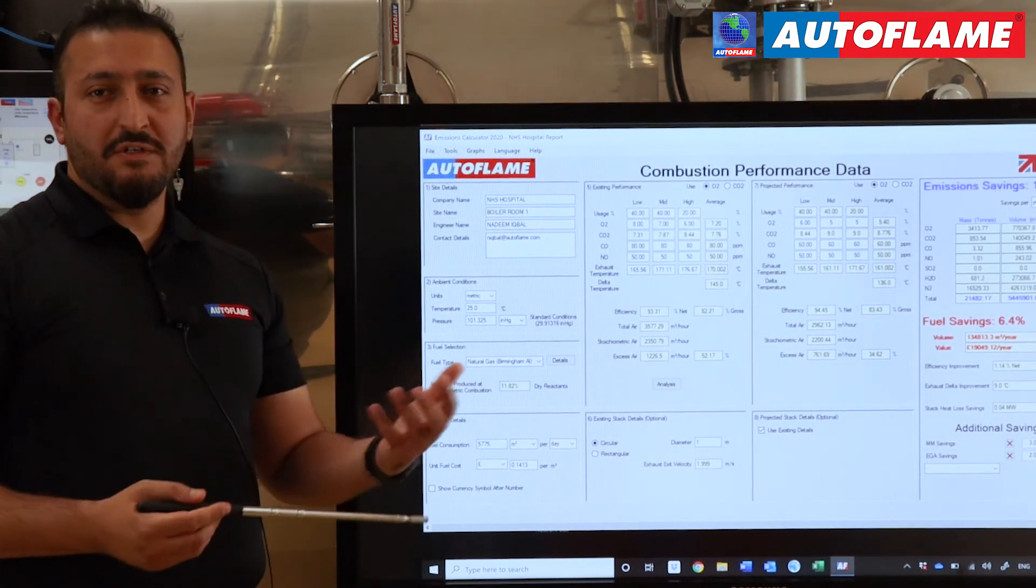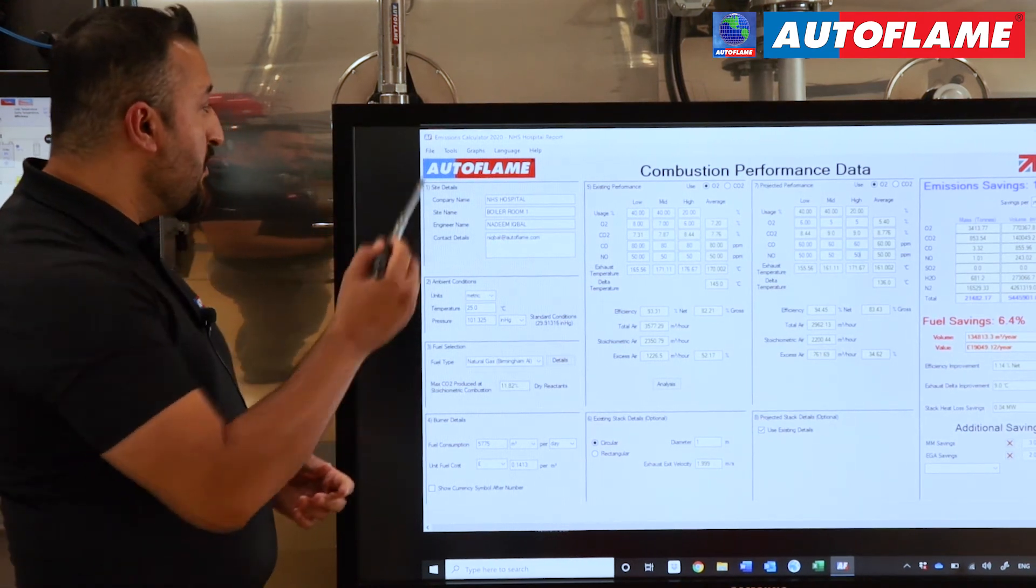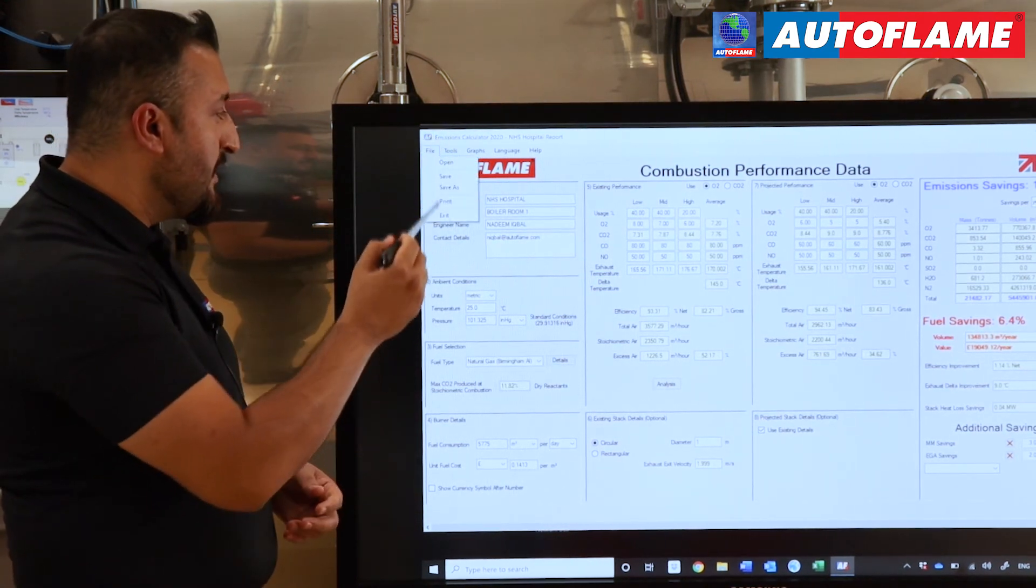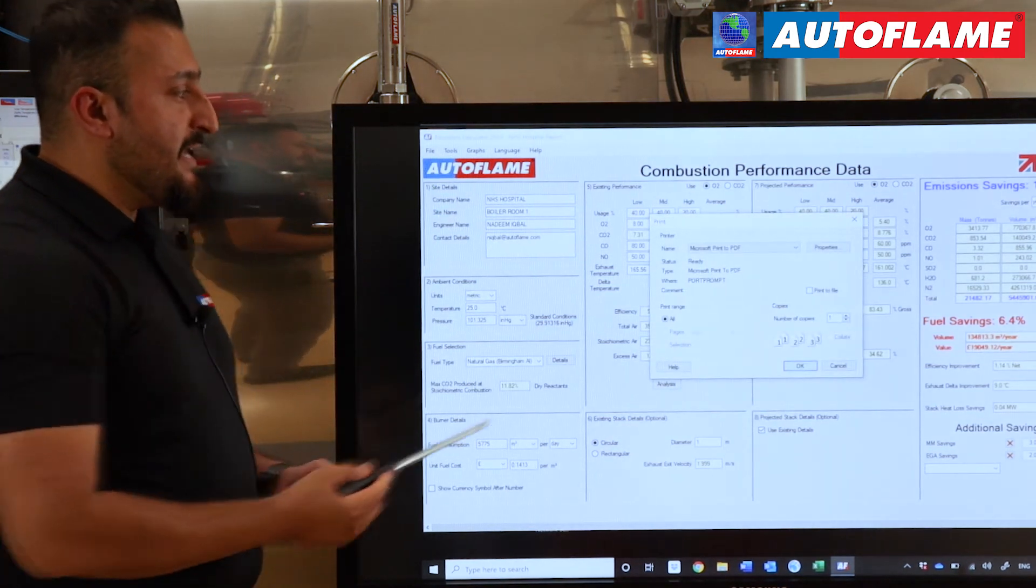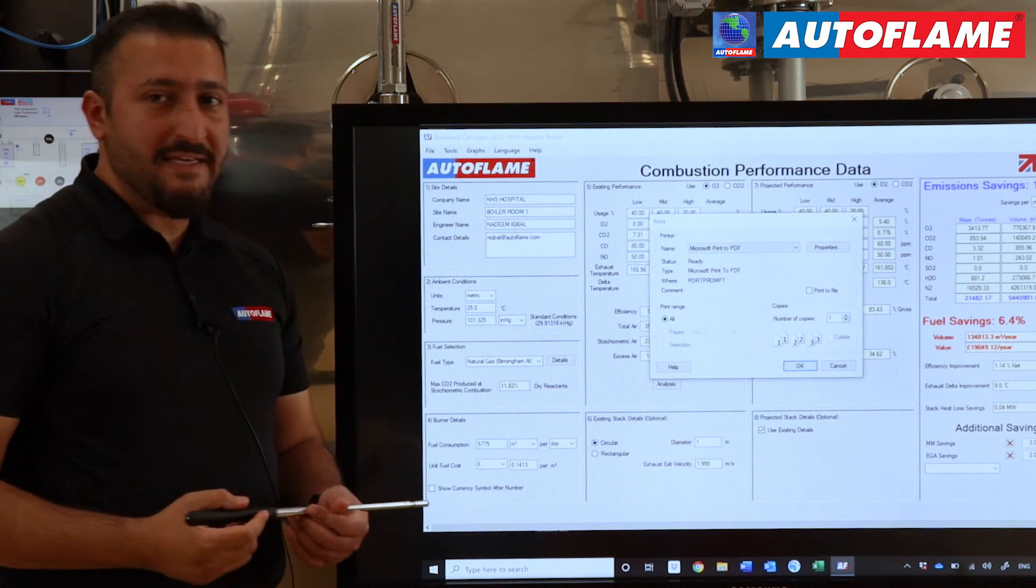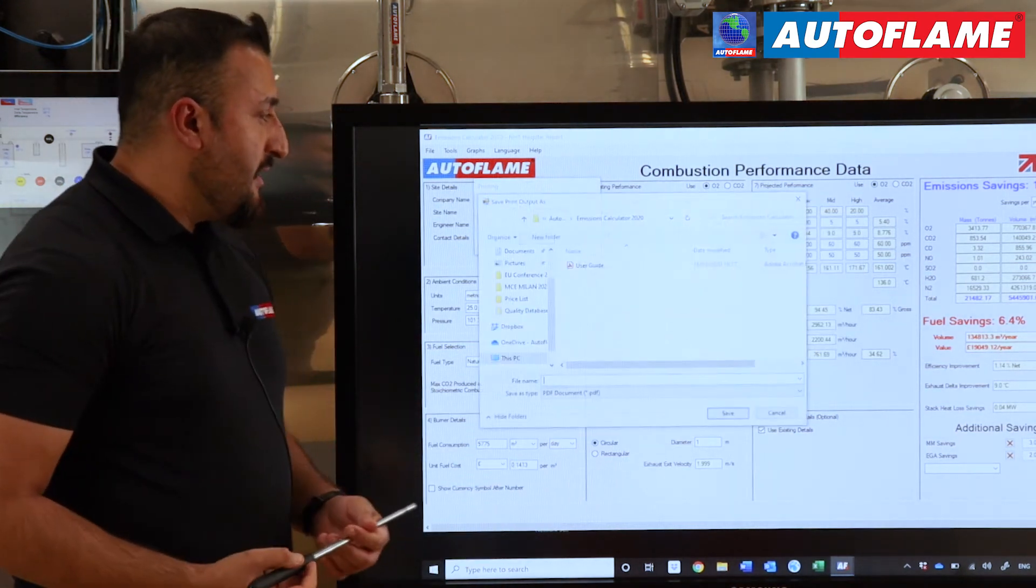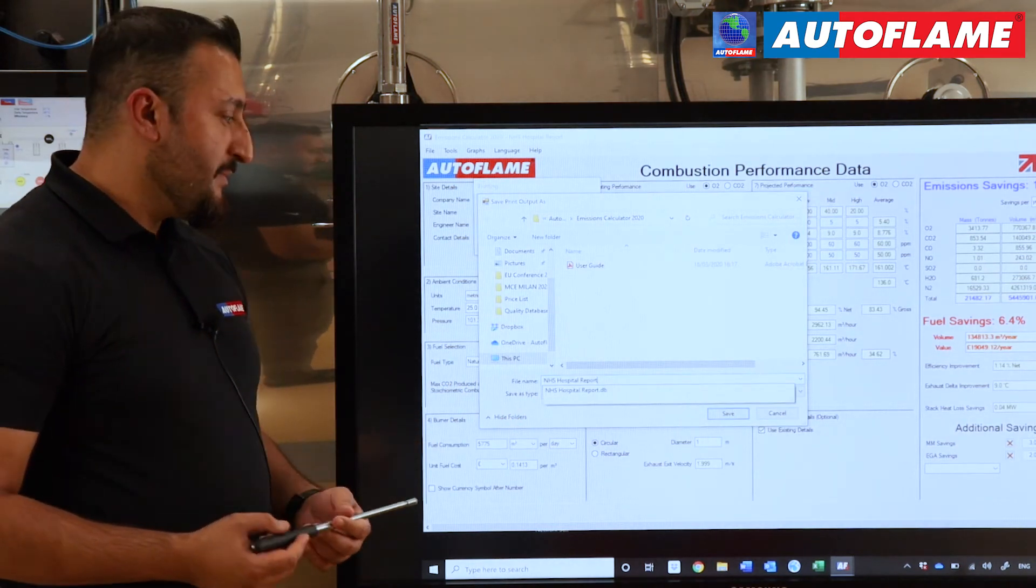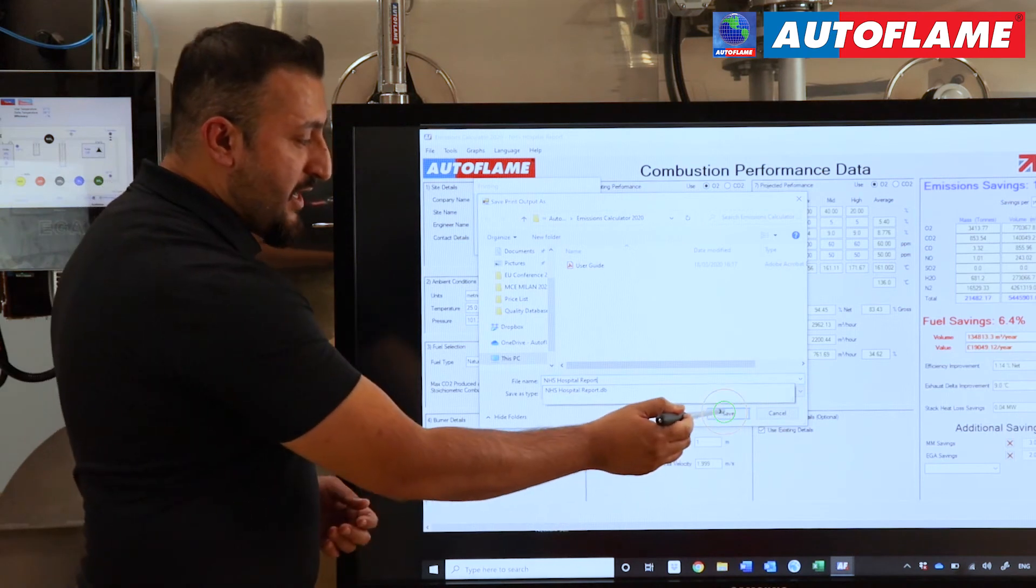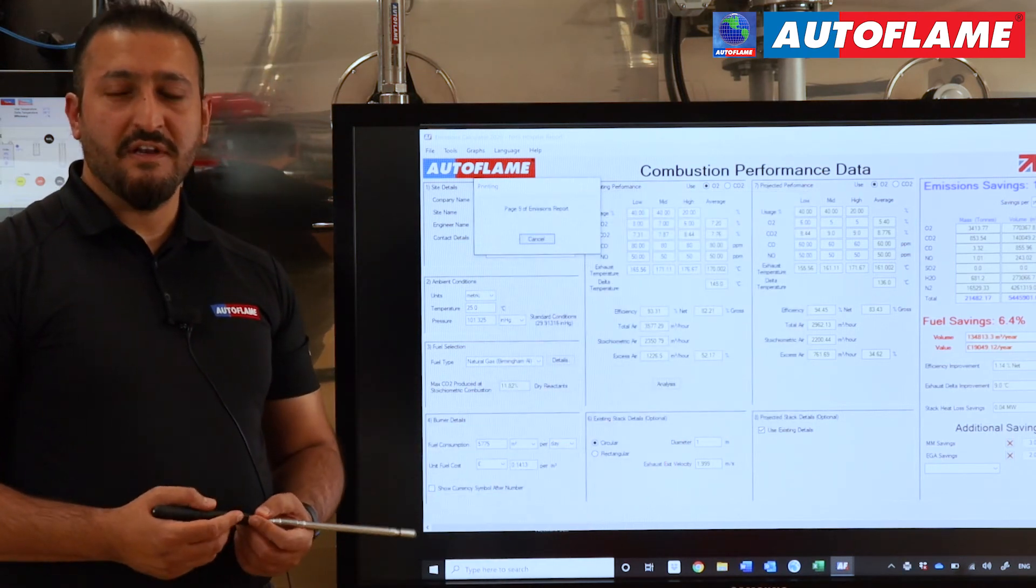Now, in order to generate a report in PDF that we can send to a client, we can go to File, Print, and simply select Microsoft Print to PDF, press OK, enter the site name which will be NHS Hospital Report, and OK. And now we have this report ready to send with a quotation to the client.